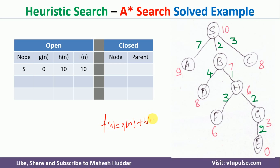g(n) is the actual cost to reach node n from the source node. For example, if you are at node B, g(n) is the cost to reach from S to B, which is 2. So f(B) starts with g(B) = 2. h(n) is the heuristic value, which is 7 in this case, giving a total f value of 9.